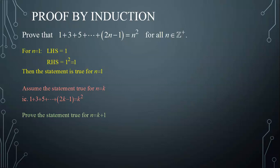Using that assumption, we are going to prove the statement true for the next rank n equals to k plus 1. To clearly see the statement to prove, I replace in the given statement n by k plus 1. I thus need to prove that the sum 1 plus 3 plus 5, all the way to 2k plus 1, is equal to k plus 1 all squared.